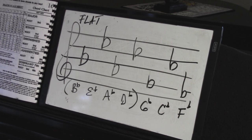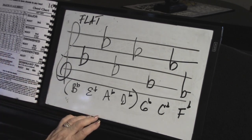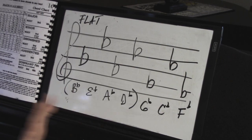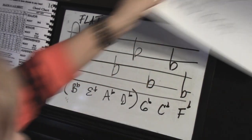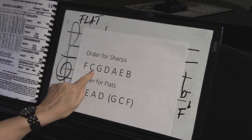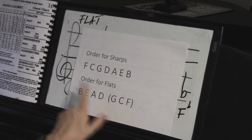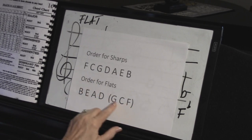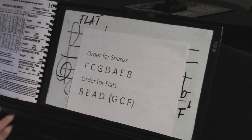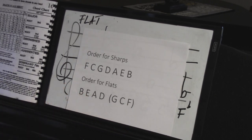What's really cool is when you study the order for sharps — Fat cats go down alleys eating birds — and the order for flats — it's exactly the same phrase, just reversed. I don't know how or why, but music is so amazing. When you start to analyze things, you ask, how did that happen?